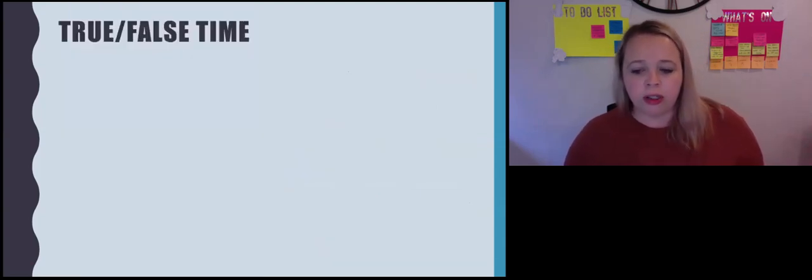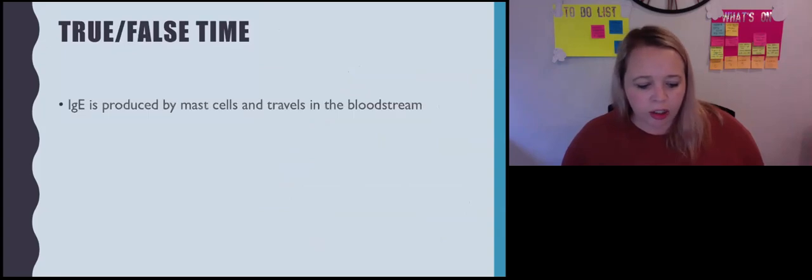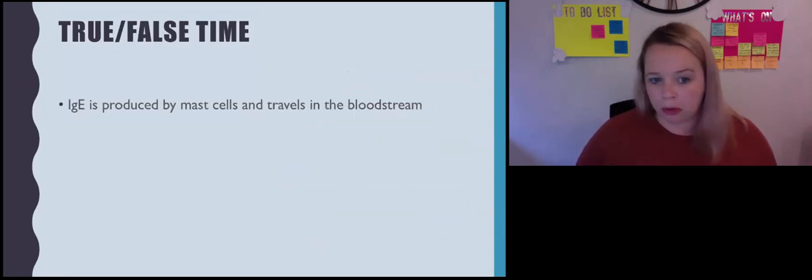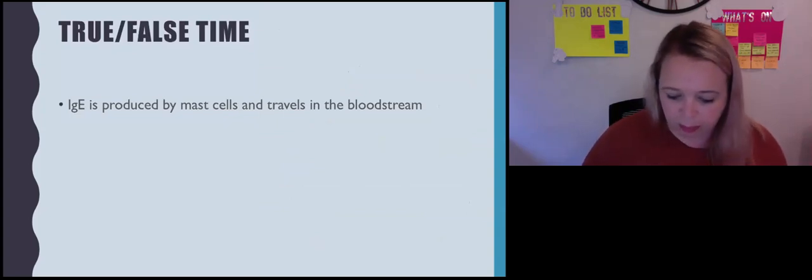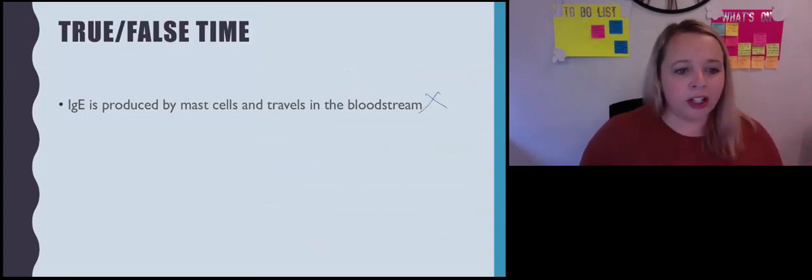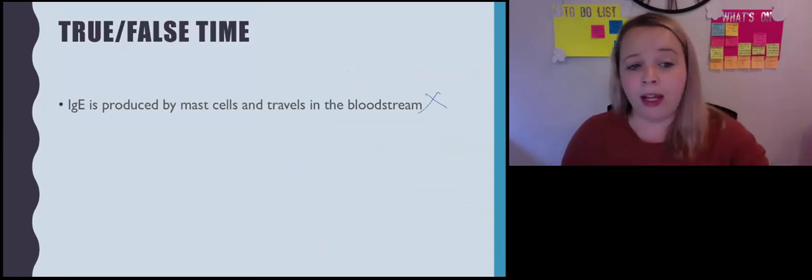Here's some true-false statements. I'm going to go through each one and you're going to try and correct them if we can. The first one, IgE is produced by mast cells and travels in the bloodstream. Pause, give it a go. IgE is produced by a B plasma cell.